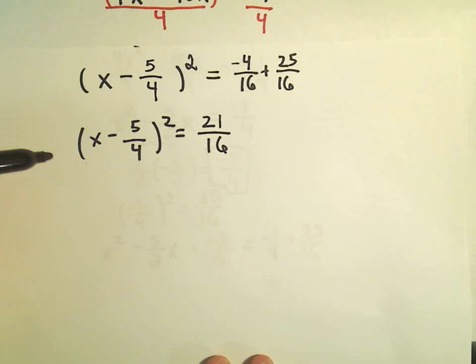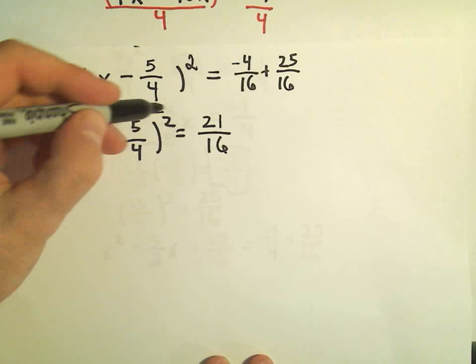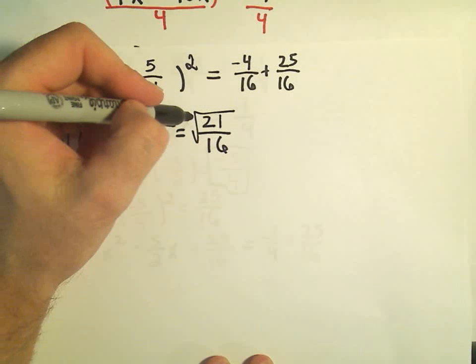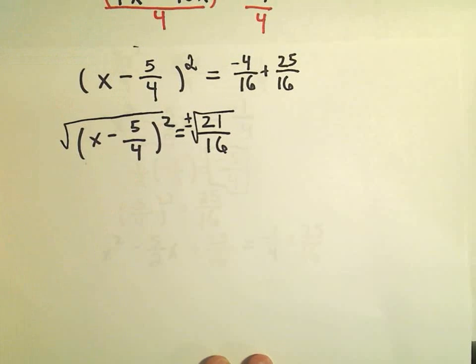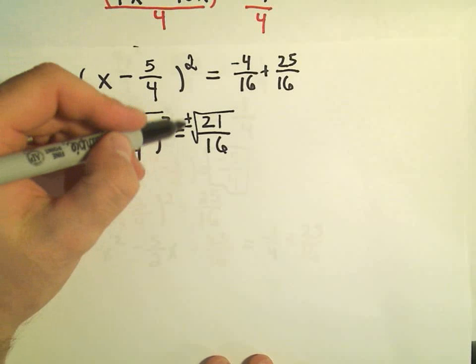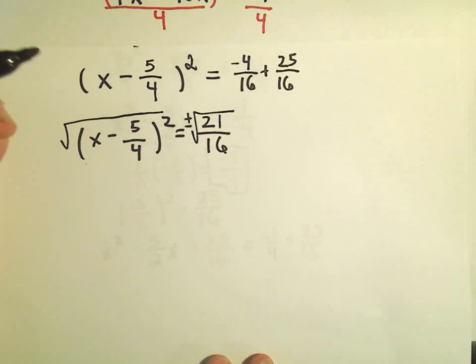And again, now I'm going to do this step of taking the square root of both sides. When I take the square root, I need to stick the positive and negative on one side. It's always easier just to stick it where the number is.